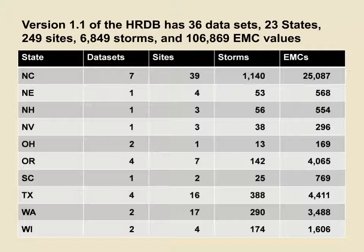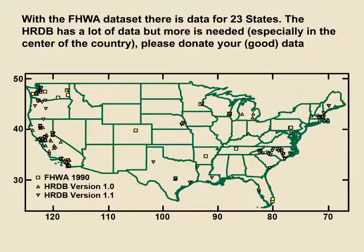The Federal Highway Administration dataset also contains data from four other states — Alabama, Colorado, Tennessee, and Pennsylvania — not shown in these tables. This is a map of the United States showing the location of Highway Runoff monitoring sites in the Federal Highway Administration, Highway Runoff Database Version 1, and the Highway Runoff Database Version 1.1 datasets. The Highway Runoff Database has a lot of data, but more is needed, especially in the center of the country.